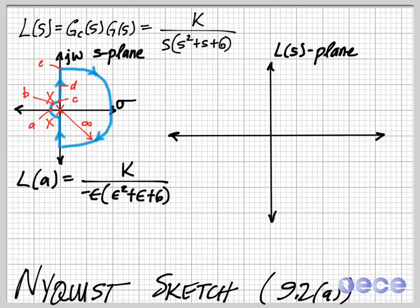So if we look at L of A, the value that we use here for epsilon is actually minus epsilon. And I actually have a little error here. Let me fix this. So this is minus epsilon squared minus epsilon plus 6. K over minus epsilon because we substitute that value in for s. The minus epsilon squared is just epsilon squared, and then minus epsilon plus 6.